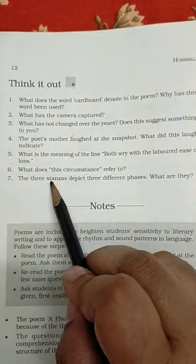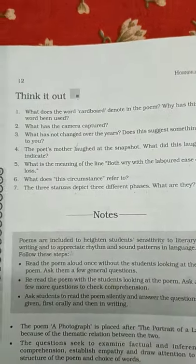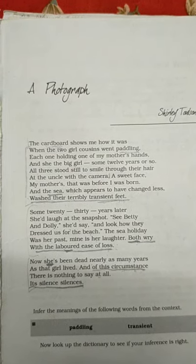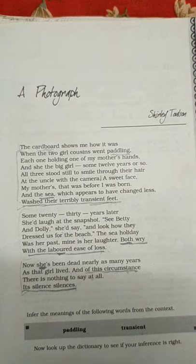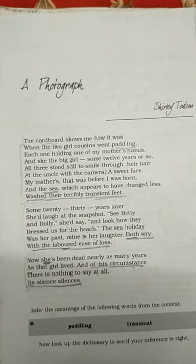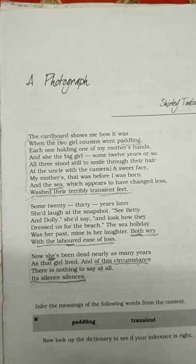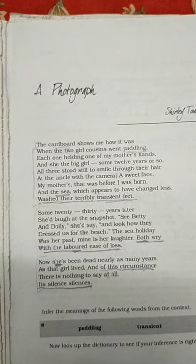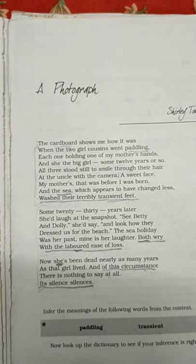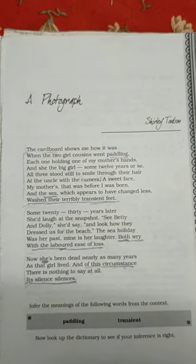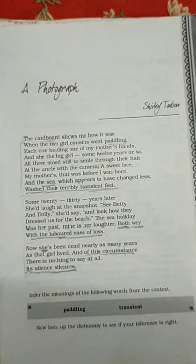The last question is: The three stanzas depict three different phases — what are they? The first stanza is the poet's description of the photograph, which had captured a moment from the mother's childhood. The second stanza deals with recollections: the mother's recollection of her childhood, just as the poet recalls her mother who is now dead. The third stanza philosophizes death and dwells on the transience of life, and the poet coming to terms with the muting silence. I hope you have understood well. When school reopens, we shall discuss the poem again. Thank you.